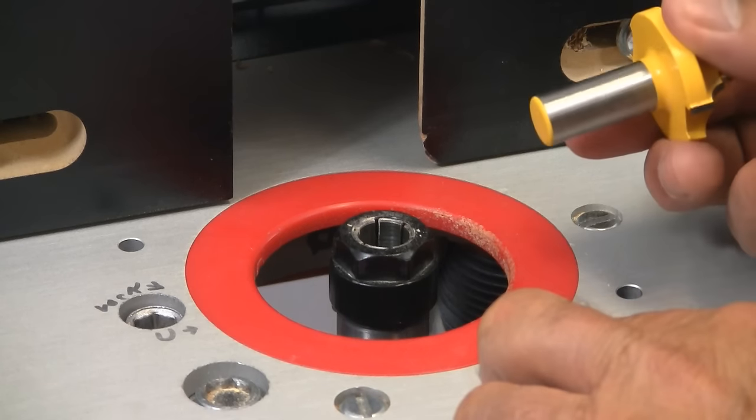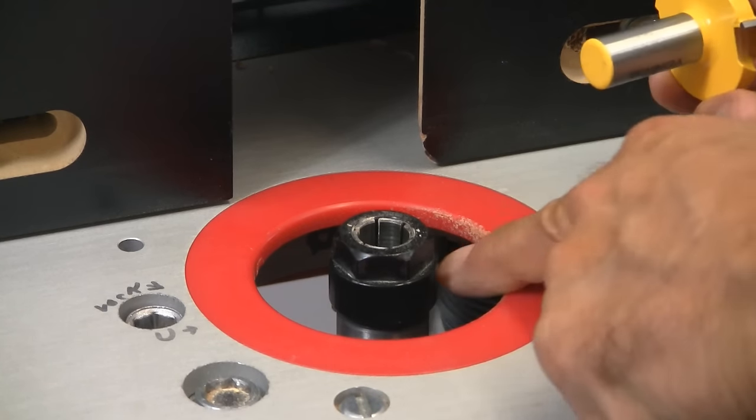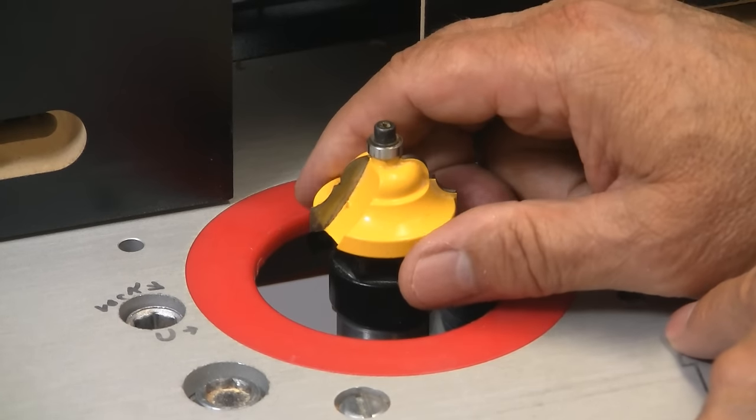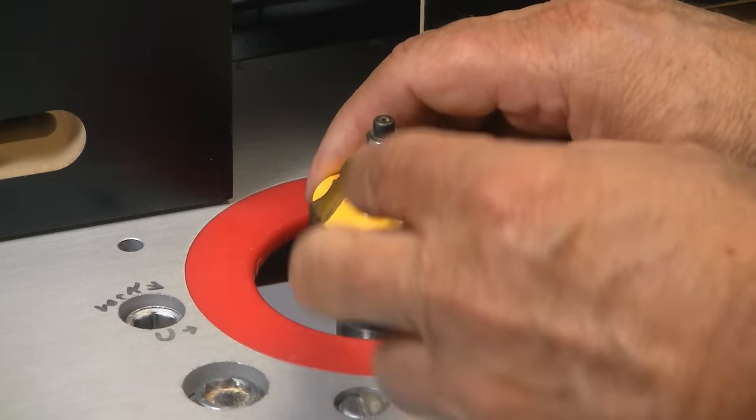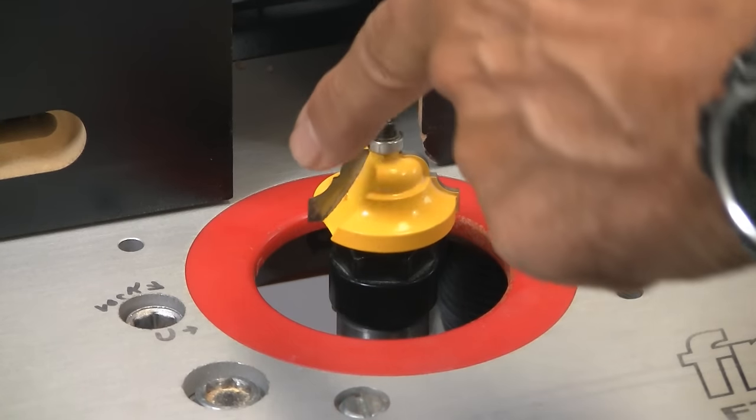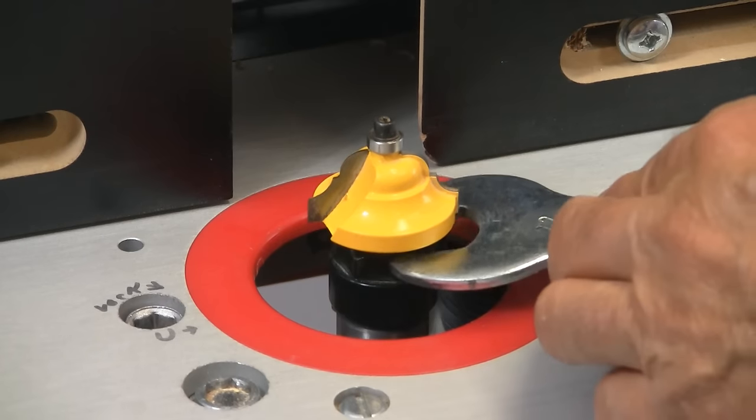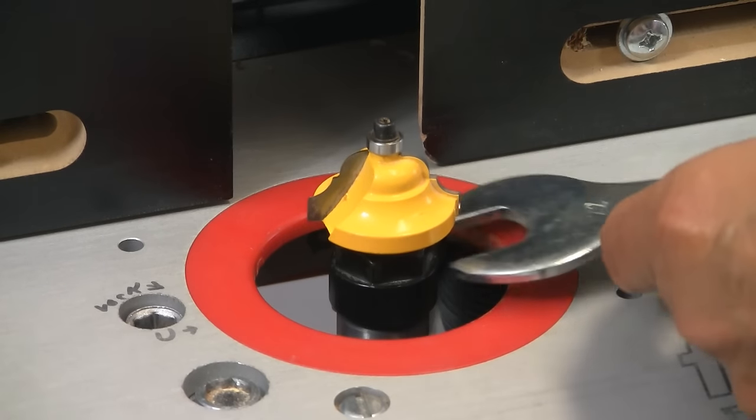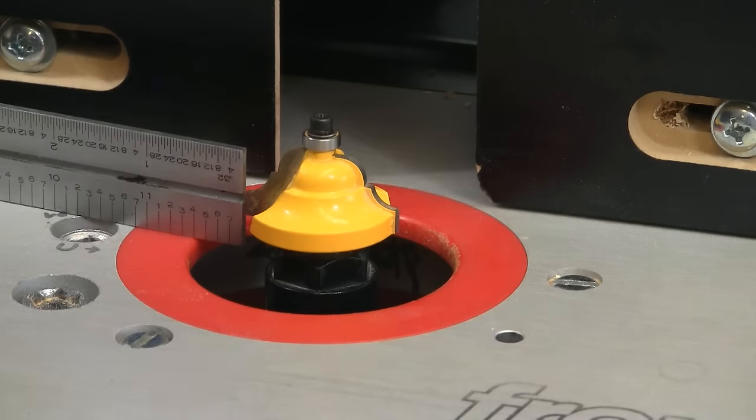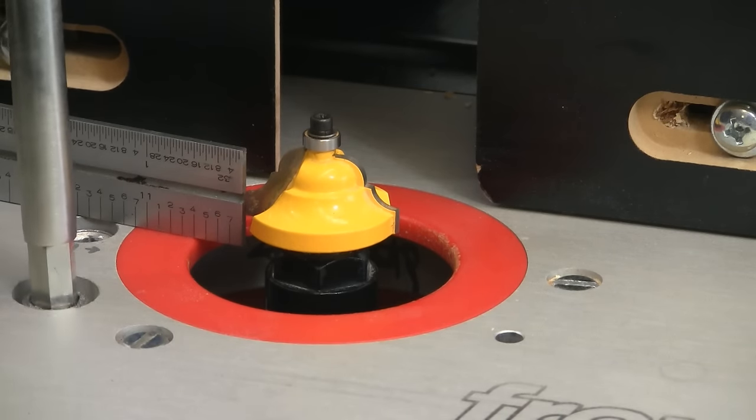To install a router bit, we lock the shank, drop the bit in to the bottom, and pull it back about the thickness of a coin. Then, we can hand tighten that, and because the shank is locked, set the height of the bit, and I want this one a little on the low side.